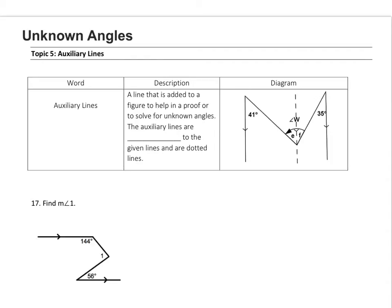This video will cover unknown angles topic 5, auxiliary lines. Auxiliary lines are lines that are added to a figure to help in a proof or to solve for unknown angles.